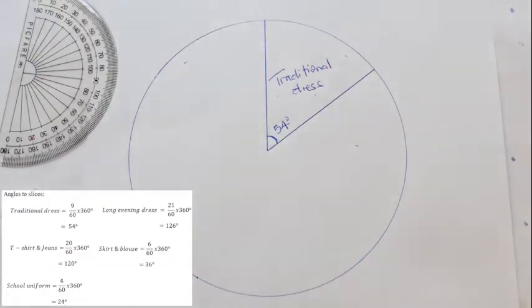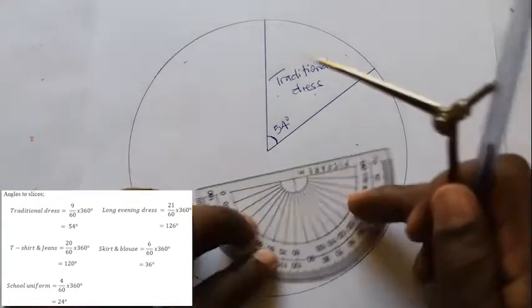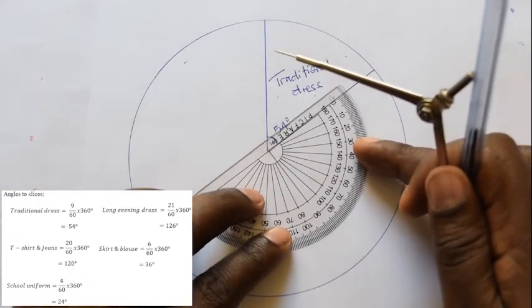In this case, traditional dress corresponds to 54 degrees. Long evening dress corresponds to 126 degrees.